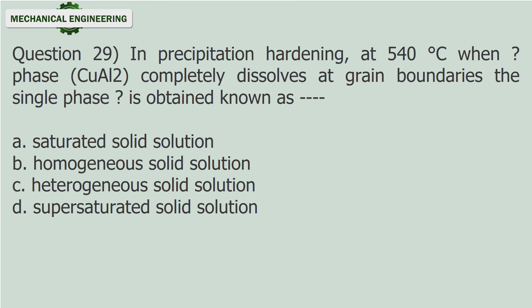Question 29: In precipitation hardening at 540 degrees Celsius, when the Cu phase completely dissolves at grain boundaries, the single phase obtained is known as — (fill in the blank). A. Saturated solid solution. B. Homogeneous solid solution. C. Heterogeneous solid solution. D. Supersaturated solid solution.